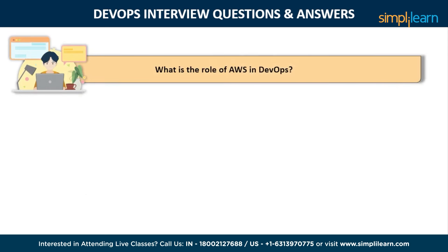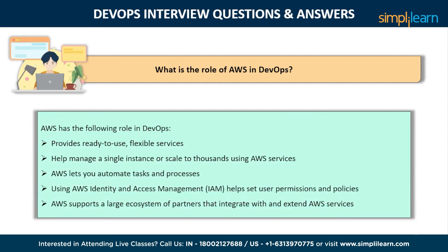Next is: what is the role of AWS in DevOps? AWS has the following roles in DevOps. First is flexible services — providing ready-to-use flexible services without the need to install or set up software. Second is built for scale — you can manage a single instance or scale to thousands using AWS services. Third is automation — AWS lets you automate tasks and processes, giving you more time to innovate. Fourth is secure — using AWS identity and access management, you can set user permissions and policies. And then comes a large partner ecosystem — AWS supports a large ecosystem of partners that integrate with and extend AWS services.